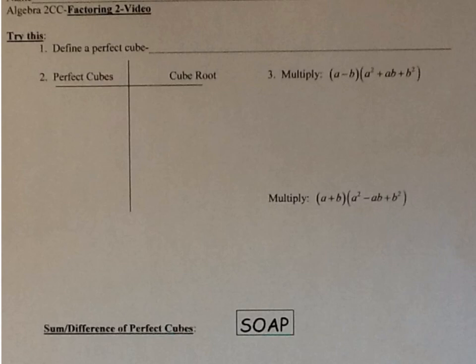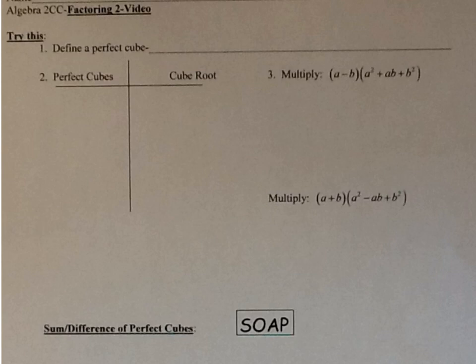Today we're going to learn about factoring the sum and difference of perfect cubes. First, you have to know what a perfect cube is. Remember, a perfect square comes from a number multiplied by itself — like 4 is a perfect square because 2×2=4, 9 is a perfect square because 3×3=9, and 16 is a perfect square because 4×4=16. A perfect square comes from multiplying a number by itself, 'square' meaning 2.